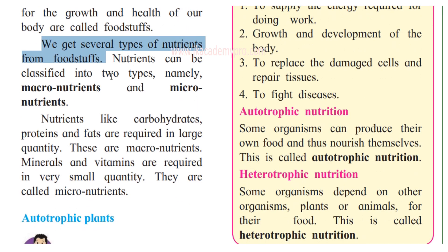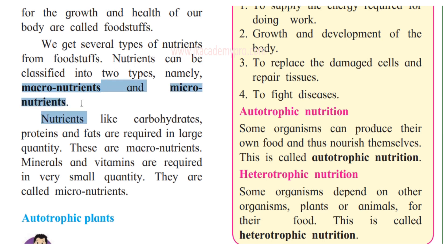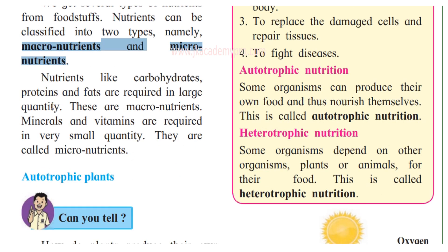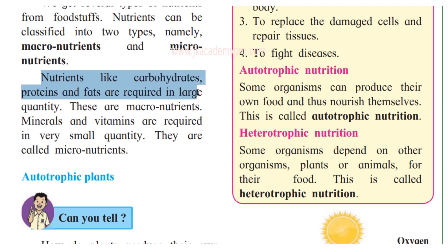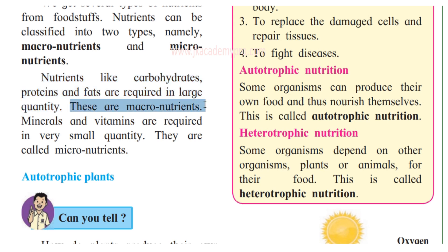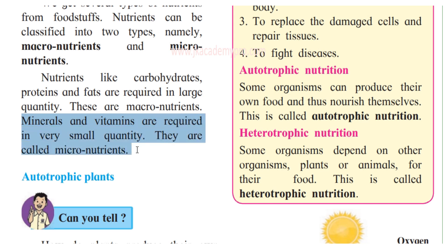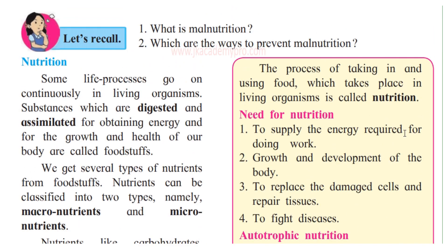We get various nutrients from foodstuffs. Nutrients can be classified into two types: macronutrients and micronutrients. Nutrients like carbohydrates, proteins and fats are required in large quantities, so these are called macronutrients. Minerals and vitamins are required in smaller quantities, so they are called micronutrients.